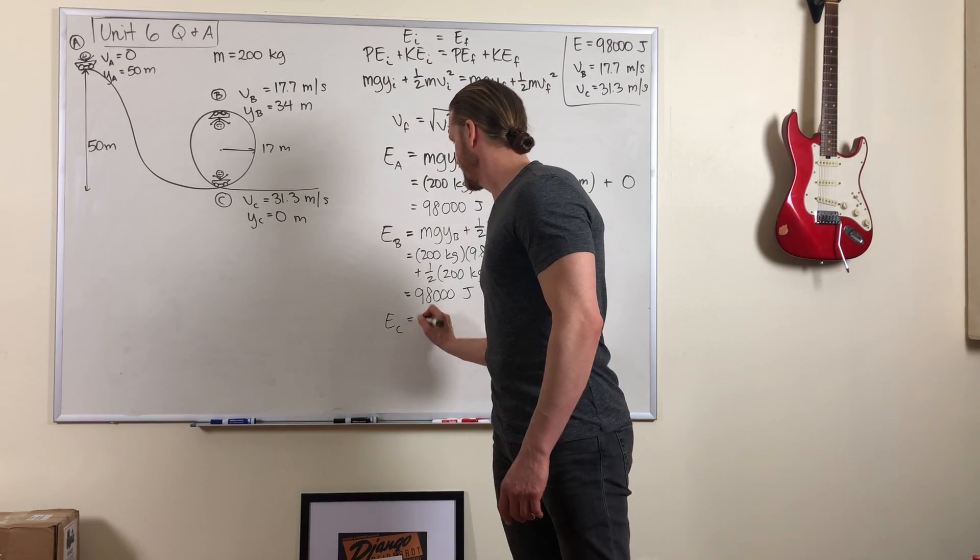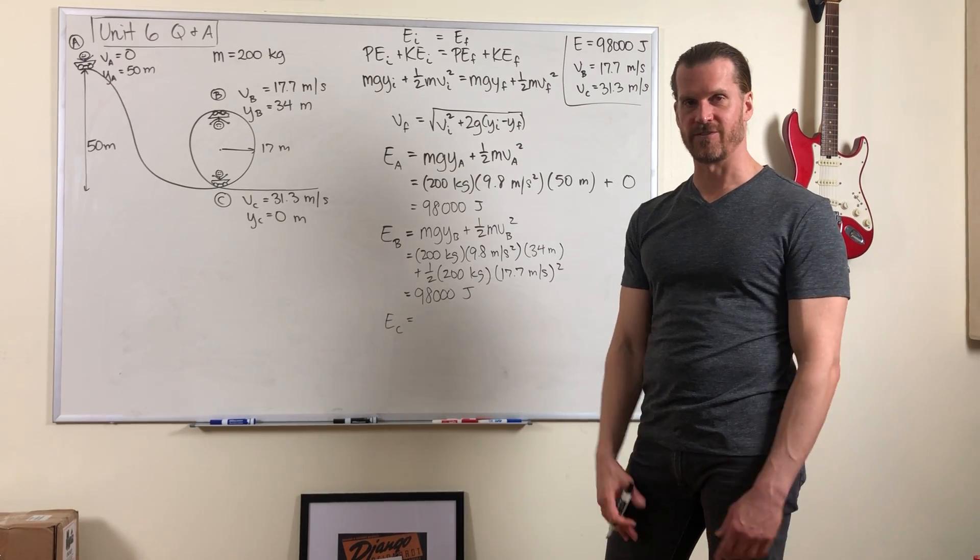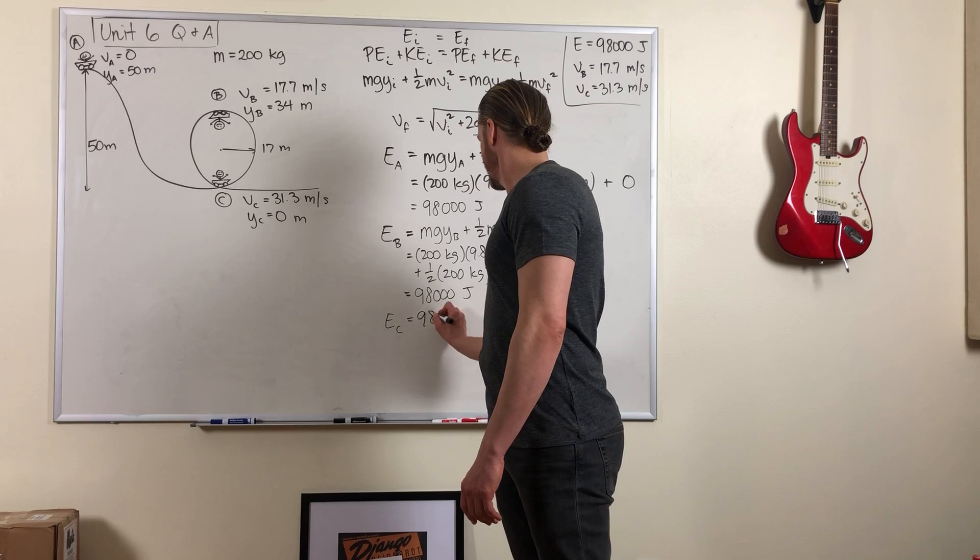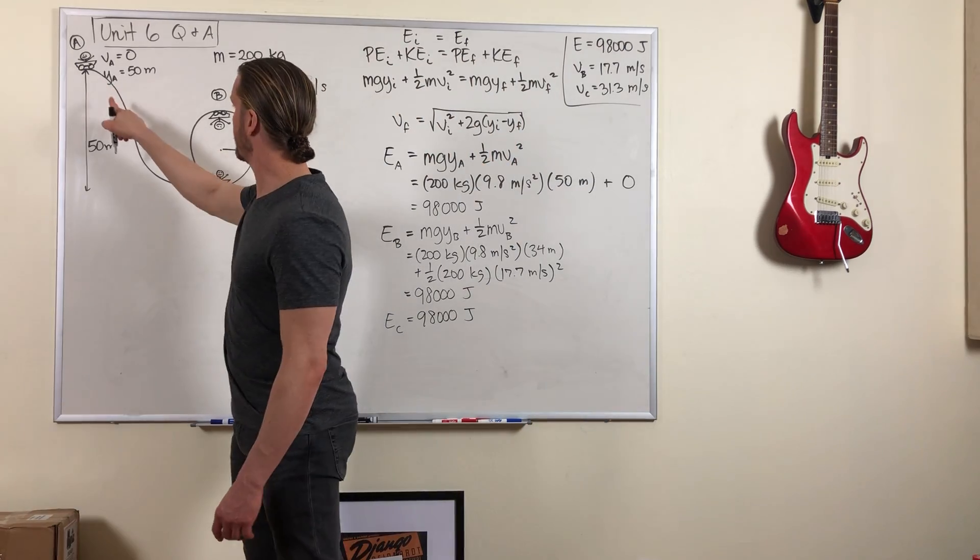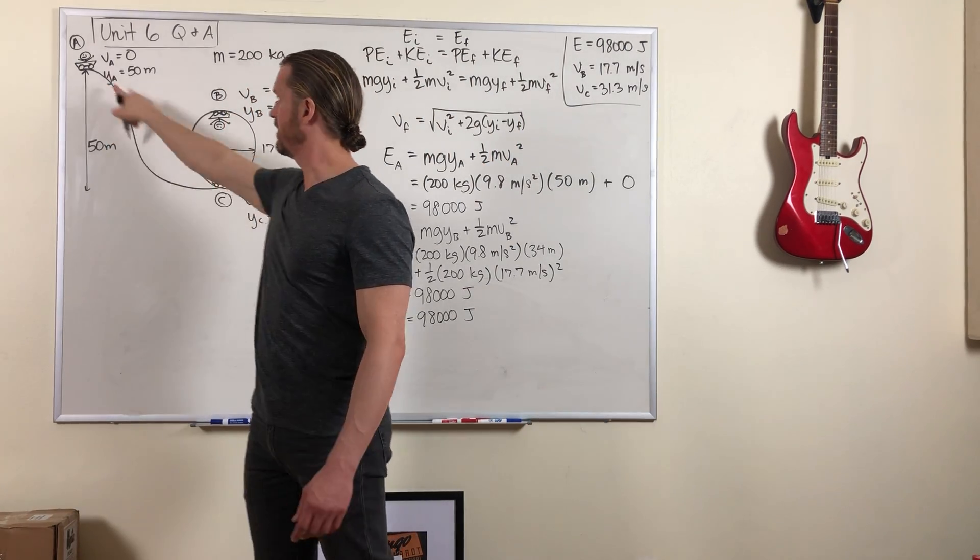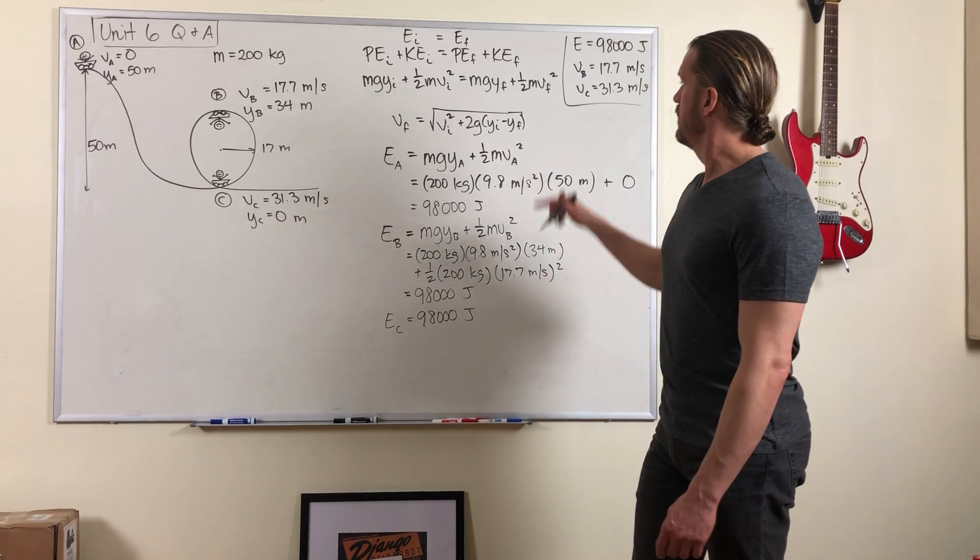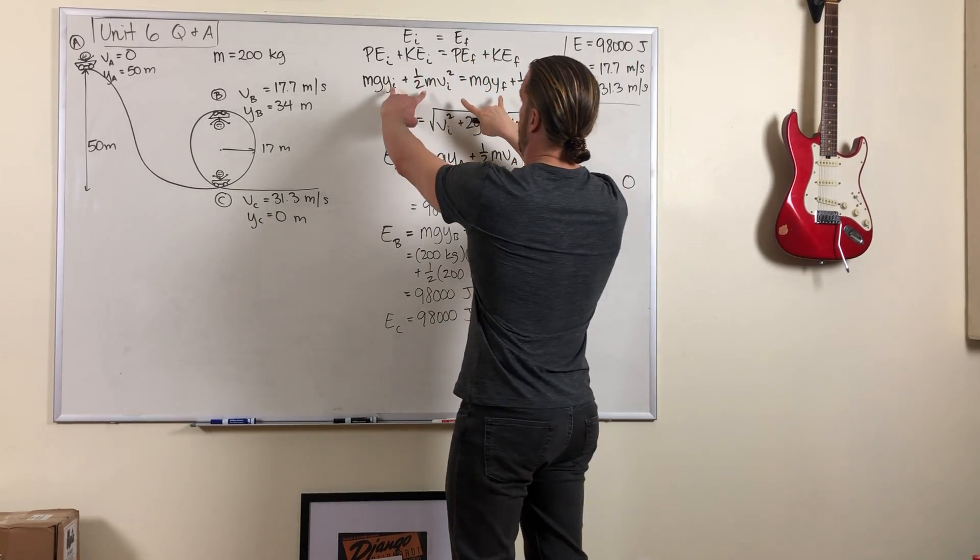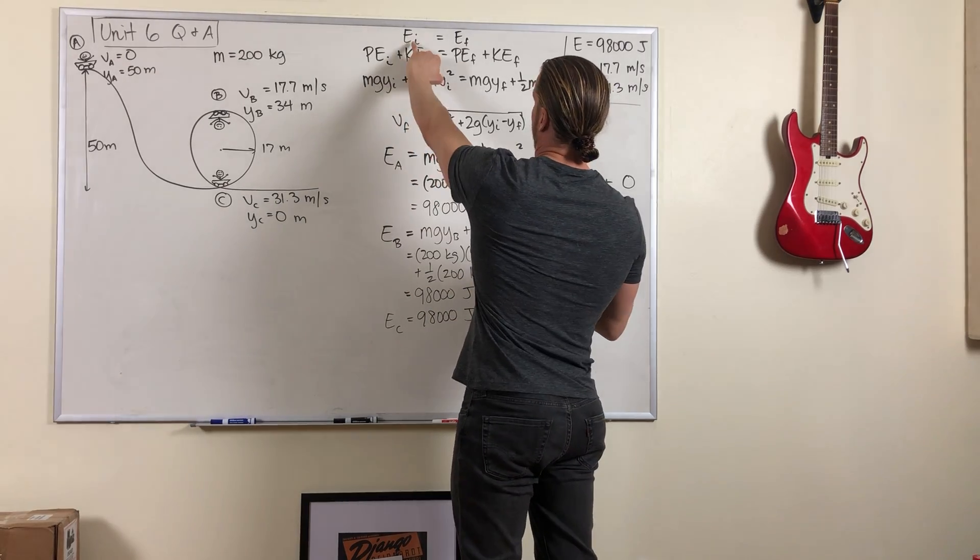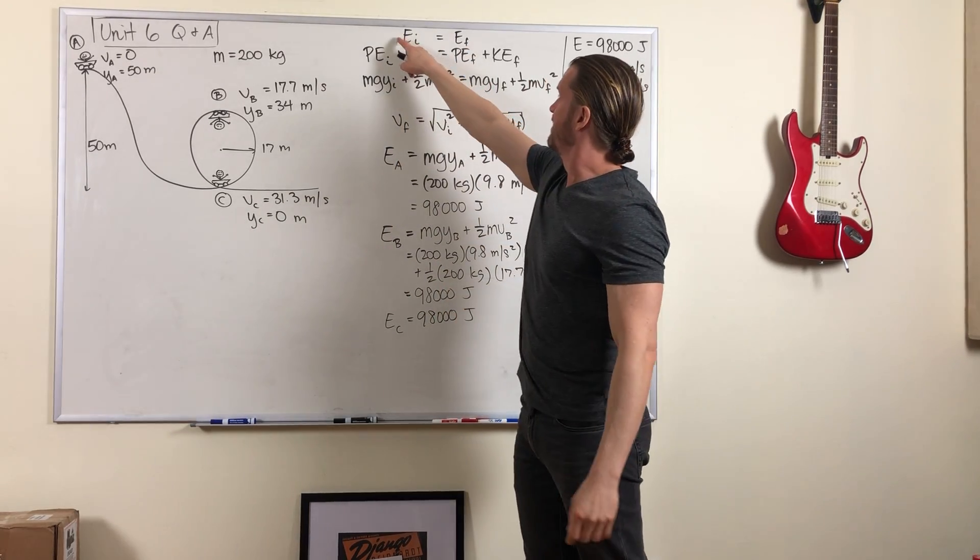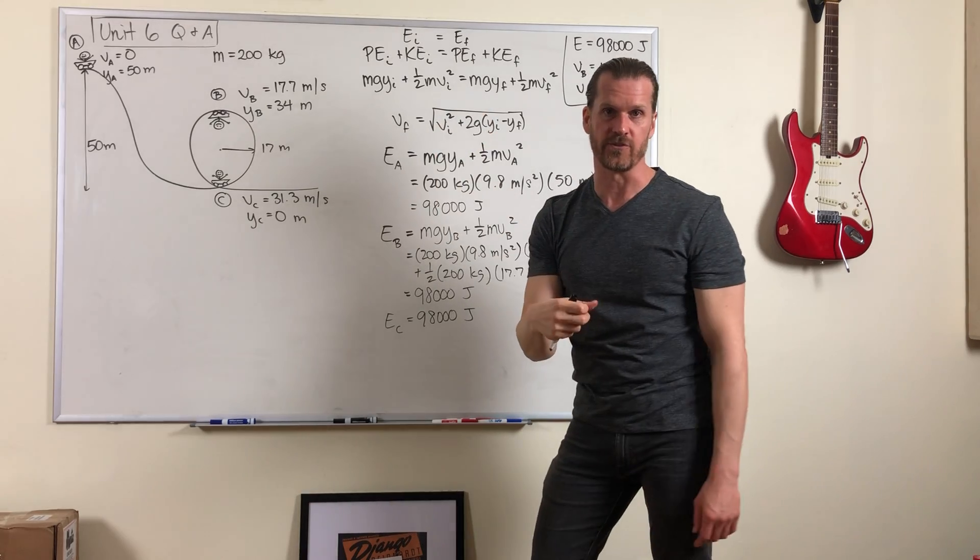And if you do it at point C at the bottom of the loop, plug in the numbers to gravitational potential energy plus kinetic energy, once again, you get the same value. And it doesn't have to be those three points. You could calculate it at any point along this path and you'd find that the total energy is always the same amount. So when you're doing conservation of energy, that means that both sides of this equation add up to the same number. All this equation is saying in this case is 98,000 equals 98,000. And it's just partitioned differently between potential energy and kinetic energy.